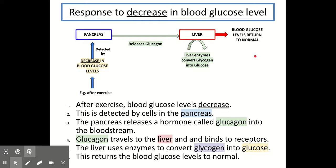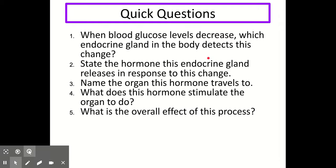To put this into clear steps: after exercise the blood glucose levels would decrease; this is detected by cells in the pancreas, which is an endocrine gland; the pancreas releases the hormone glucagon — because glucose is gone, we release glucagon — into the bloodstream; this travels to the liver, which is the target tissue; the glucagon binds to receptors on the liver, which tells the liver to use its enzymes to convert glycogen into glucose; that glucose is then released into the blood, bringing blood glucose levels back to normal.